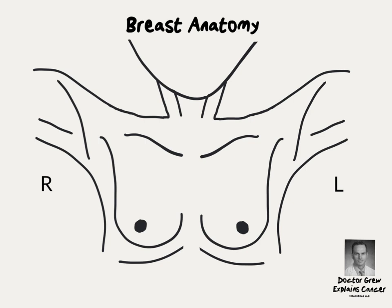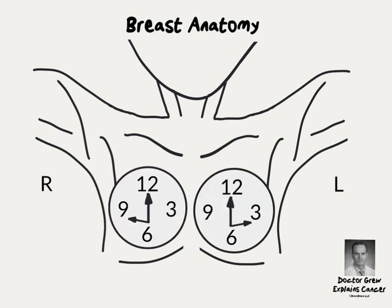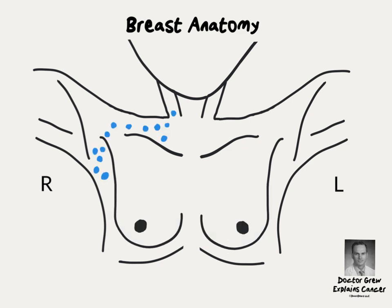Note that the outer aspect of the breast on the left is the three o'clock position, whereas on the right the outer aspect of the breast is the nine o'clock position.